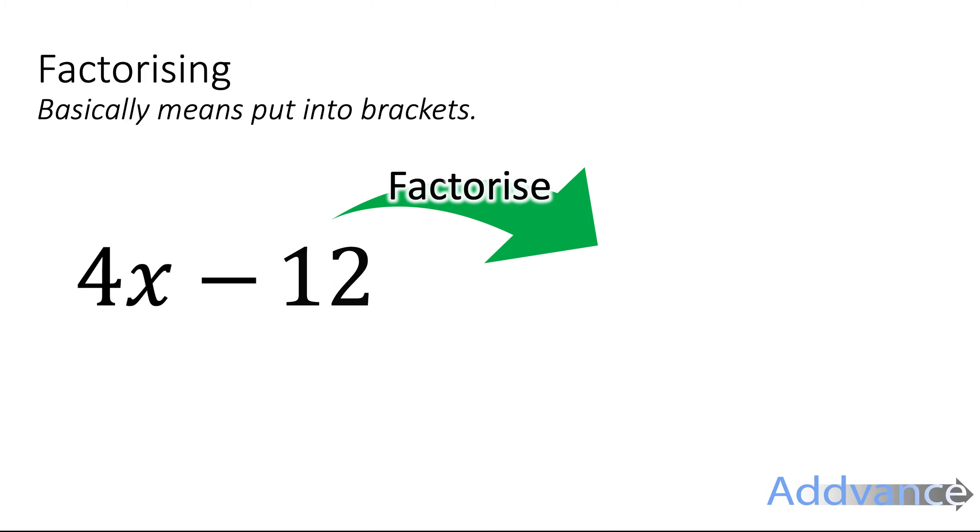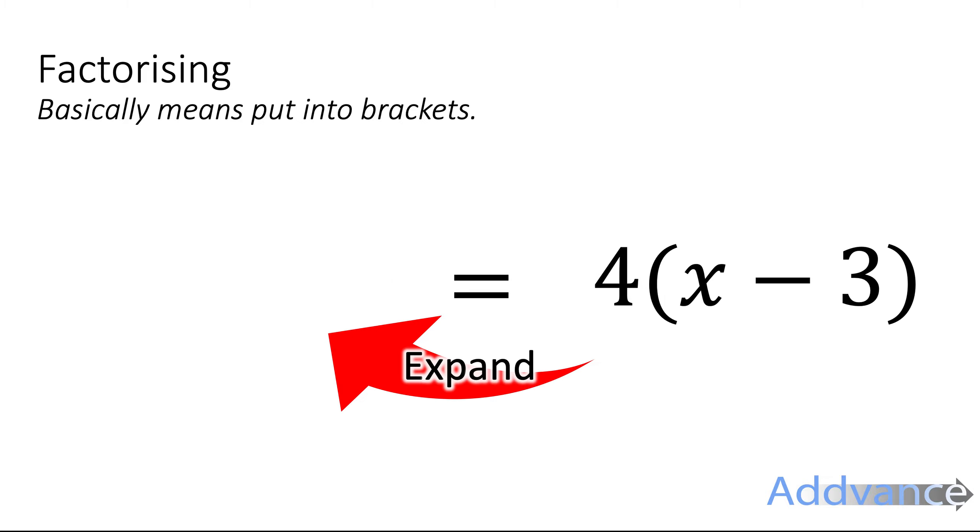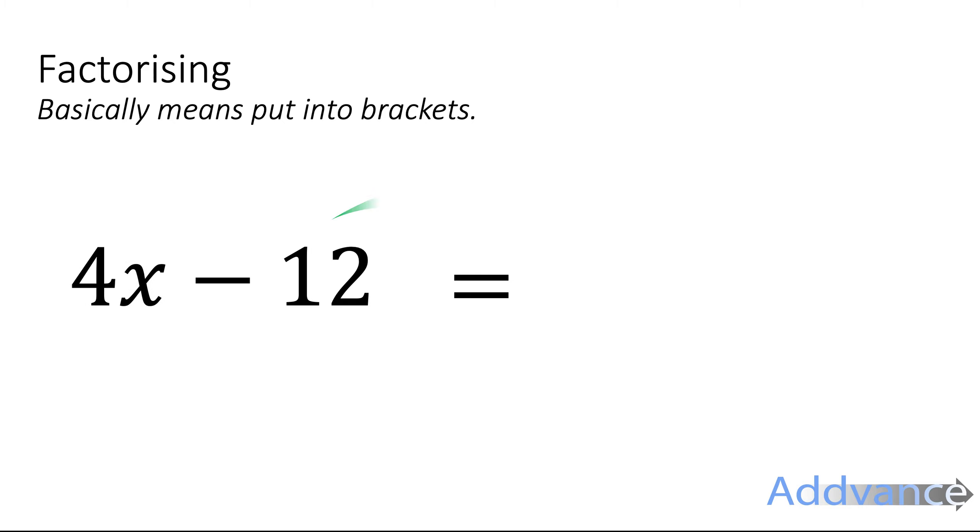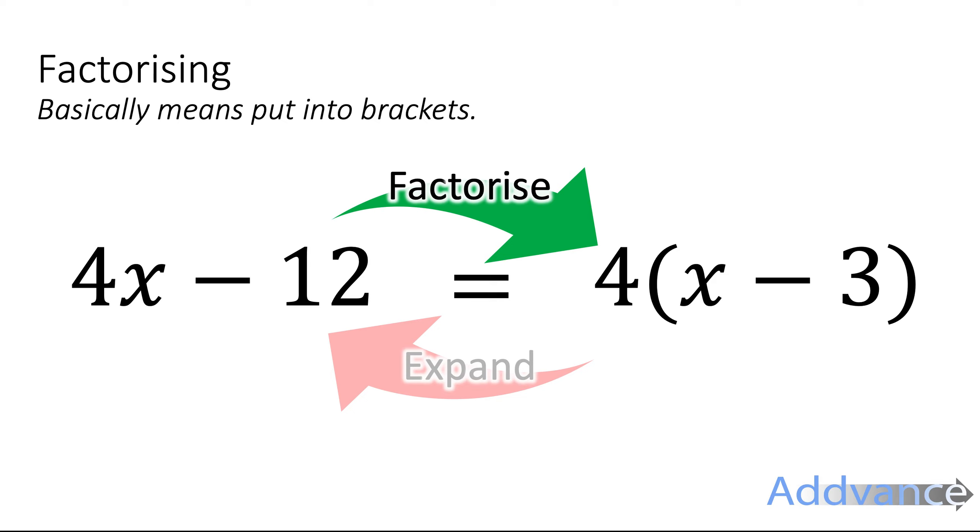For example, here we have 4x - 12, we're going to factorise it as 4(x - 3). The opposite is expanding, and if you've not watched my video on expanding brackets already, the link will be in the top right of the video now and it will also be in the description.